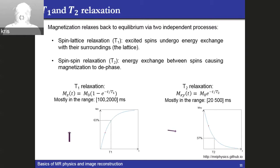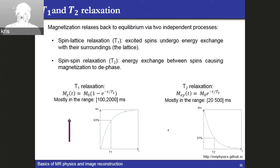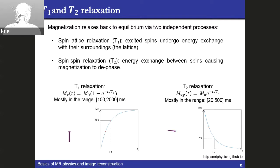These are interesting properties because they're specific to a given tissue — every different tissue will have different T1 and T2 values, which are later used to create different contrasts in a model. Once we flip the magnetization into the transverse plane, it doesn't flip back; these are two independent processes that happen on different timescales. T2 decay happens very quickly — we quickly lose signal in the transverse plane — and then on a scale about ten times slower, we slowly recover a longitudinal signal.